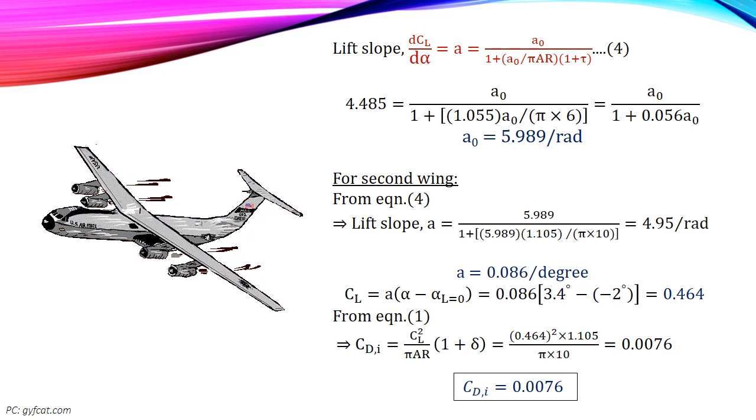Now we can find out the induced drag coefficient for the second wing. Substitute lift coefficient, aspect ratio, induced drag factor of second wing in equation number 1 and then simplify. We get the required induced drag coefficient is 0.0076.